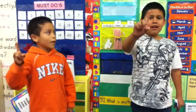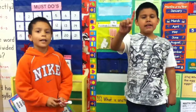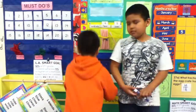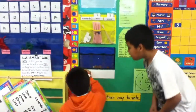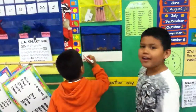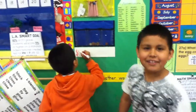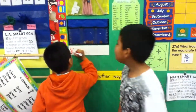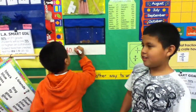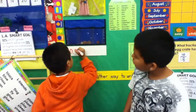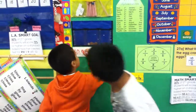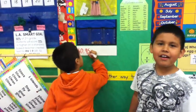One way to write 95 cents is: zero, decimal point, 95. So that's $0.95.